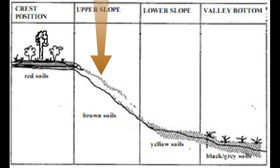That runoff causes a lot of leaching and carrying of materials in sediment form. When leaching occurs, it carries bases away, which means the soils at the upper slope have a low pH. The bases that would cause the soil to be basic have been washed away, leaving the soil acidic. However, because there is a lot of weathering, the soils are deep compared to the crest position.